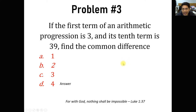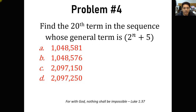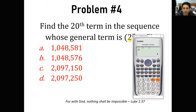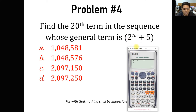You can perform this easily on your calculator even if you forgot the formula for arithmetic progression. For the next problem: find the 20th term in the sequence whose general term is 2 raised to n plus 5. We are going to find the 20th term of this sequence.